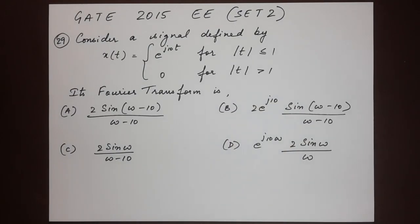Here's question number 29. Consider a signal defined by x(t) = e^(j10t) for |t| ≤ 1, and x(t) = 0 for |t| > 1. Its Fourier transform is?